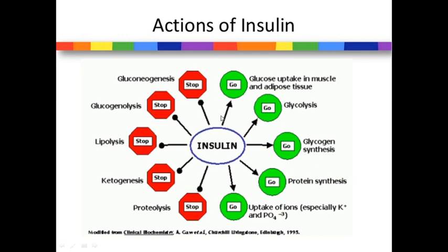Here is a diagram where green color shows the stimulating part of insulin action, and which reactions of insulin are suppressed. Insulin stimulates anabolic processes and also increases uptake of ions and decreases destroying processes. Insulin decreases glycogenolysis, lipolysis, ketogenesis, proteolysis, and also suppresses gluconeogenesis - the formation of glucose from amino acids and from lactate, for example.